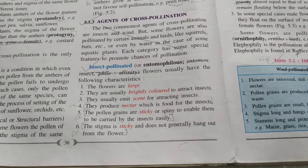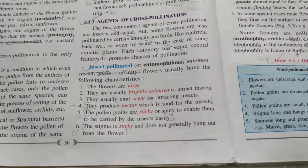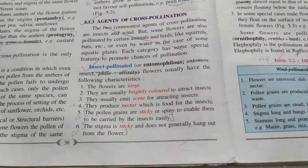The pollen grains should be sticky, and so should the stigma, so that insects can easily pass on the pollen grains from one flower to another. These flowers tend to be in clusters, making them conspicuous and visible. For example, dahlia and lotus are insect-pollinated flowers.